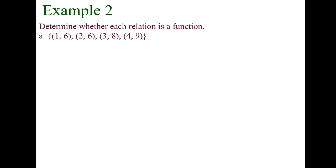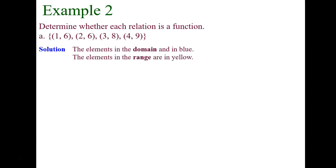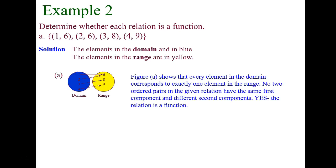Take a look at this example. Input 1 maps to output 6. Input 2 maps to output 6. Input 3 maps to output 8. Input 4 maps to output 9. Does every input map to only one output? The domain is {1, 2, 3, 4} and the range is {6, 8, 9}. It's tempting to say it's not a function because 6 repeats, but 6 is in the range, not the domain. Every input — 1, 2, 3, and 4 — each maps to only one output, so this is a function.